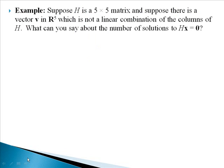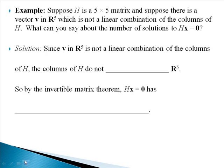Let's look at another example. Suppose a matrix H is a 5 by 5 matrix, and suppose there is a vector V in R5, meaning there are 5 entries in our vector. This vector V is not a linear combination of the columns of H. So what can you say about the number of solutions to H times X equals 0, the homogeneous equation? Since V is a vector in R5 and it's not a linear combination of the columns of H, then we know that our columns do not span R5.